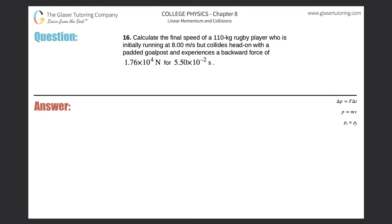Number 16. Calculate the final speed of a 110 kilogram rugby player who is initially running at 8 meters per second but collides head-on with a padded goalpost and experiences a backward force of 1.76 times 10 to the 4 Newtons for 5.5 times 10 to the minus 2 seconds.